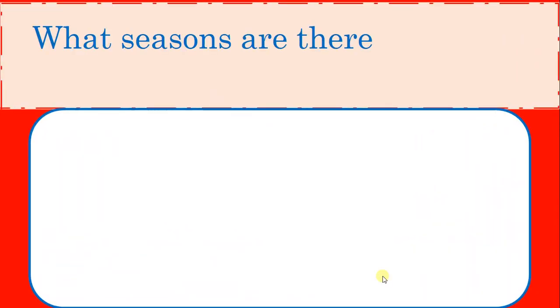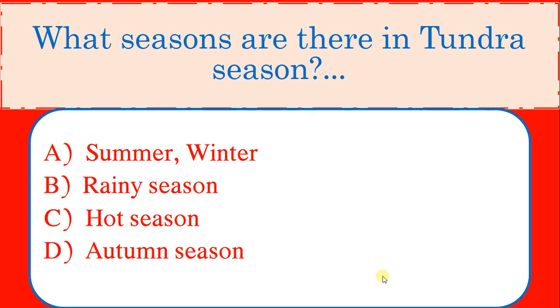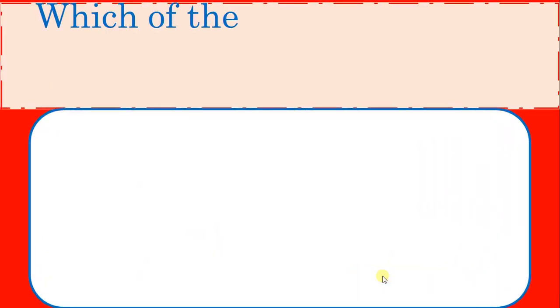What seasons are there in Tundra season? Options: Summer and winter, Rainy season, Hot season, Ottoman season. Correct answer: Summer and winter season.